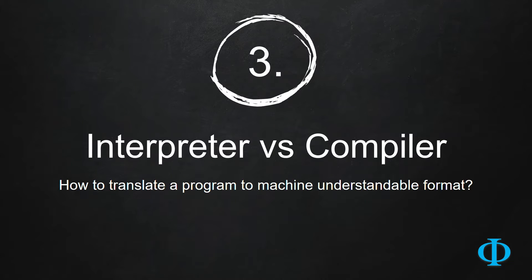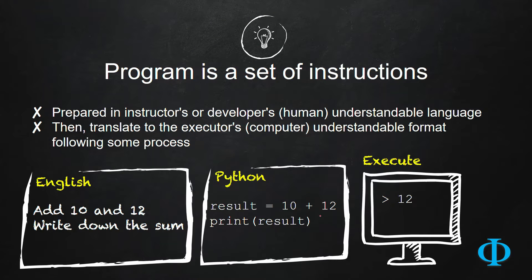Before executing a computer program, there is another step involved. The computer program has to be translated to truly machine understandable language. So what is the meaning of truly machine understandable language?